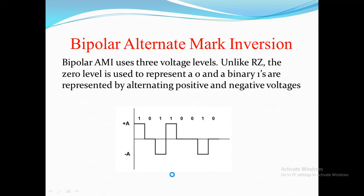The last type is bipolar encoding, specifically Bipolar AMI (Alternate Mark Inversion). It uses three voltage levels: positive, zero, and negative. Unlike RZ, the zero level is used to represent binary 0, and binary 1s are represented by alternating positive and negative voltages - if the previous 1 was positive, the next 1 will be negative, and vice versa. For example: 1 goes to high voltage, 0 stays at zero voltage, next 1 goes to negative voltage, next 1 goes to positive, then two zeros remain at zero voltage.